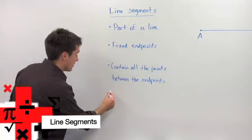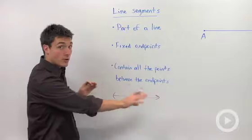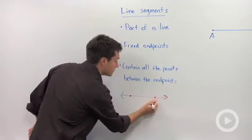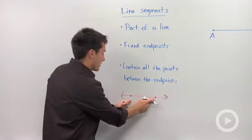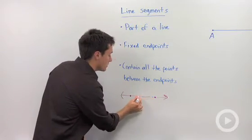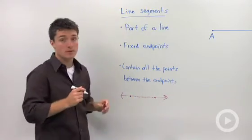If you had a line, so if I draw in arrows which says that they're going to go on infinitely, and you pick two points on that line, and you said that, wait a minute, I'm only concerned about the points that are in between these two points right here, you'd be creating a line segment.